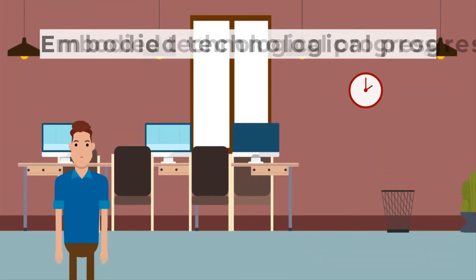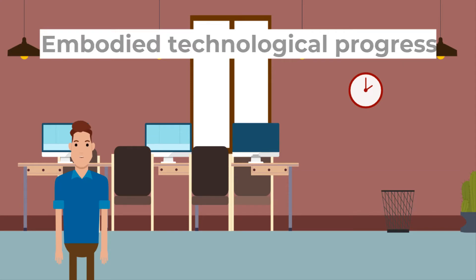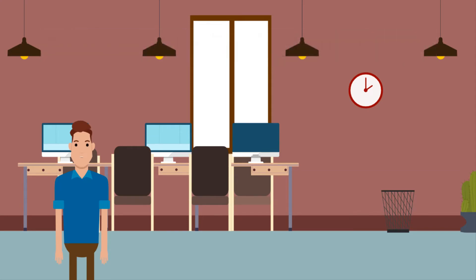1. Embody technological progress. Unlike people, a machine can embody thousands of patents and millions of hours of research and development. People have to start basically from the beginning, at birth.